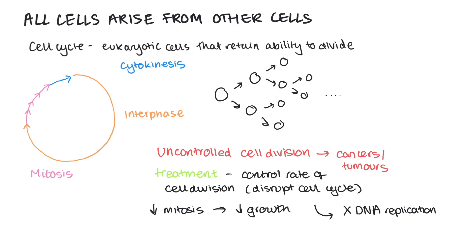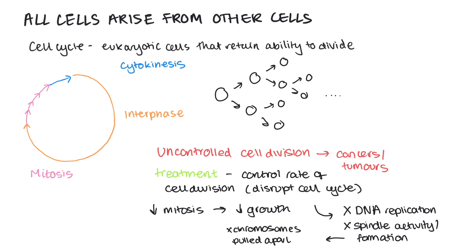Another thing that we can do is to disrupt spindle fibre activity and formation. If these don't form, then chromosomes can't attach to the spindle fibres by their centromeres and sister chromatids can't be pulled to opposite sides of the cell. This means the nucleus won't divide and we prevent and slow down mitosis.